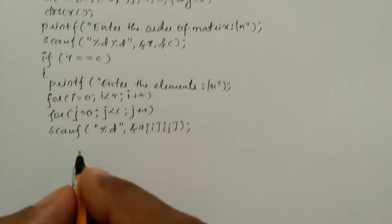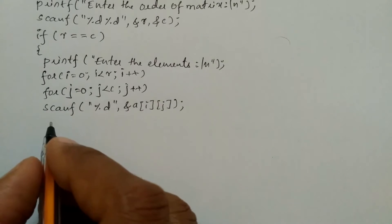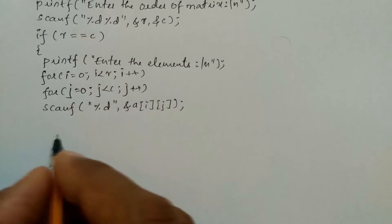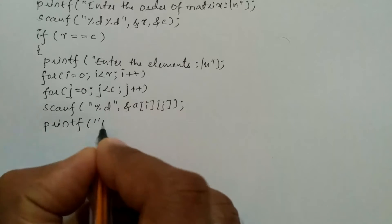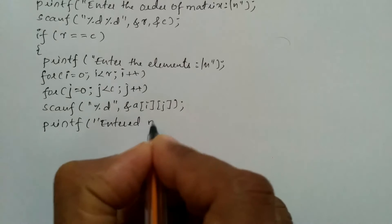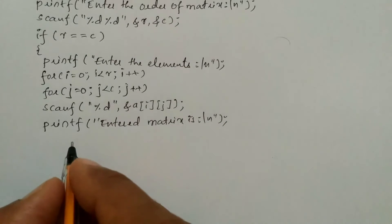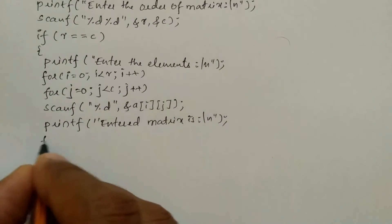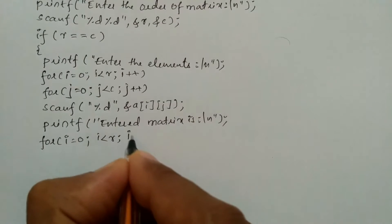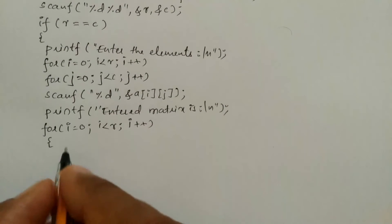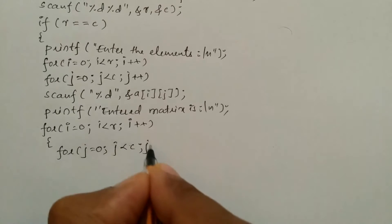After receiving the elements from the user through keyboard, I need to arrange them in the form of a matrix with the correct number of rows and columns. For that I'm going to write printf and in double quotation marks write 'entered matrix is', backslash n, and put semicolon. Here I'm going to use again the same for loop for i is equal to zero, i is less than row, i plus plus, then curly open brace, and the next for loop for j is equal to zero, j is less than column, j plus plus.